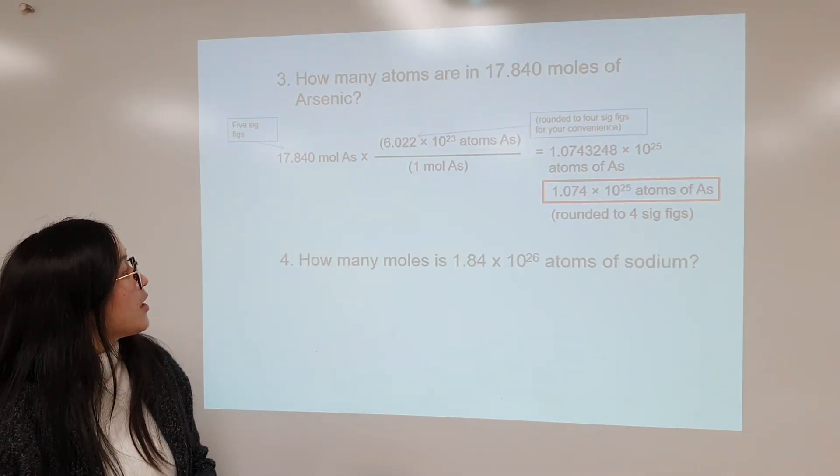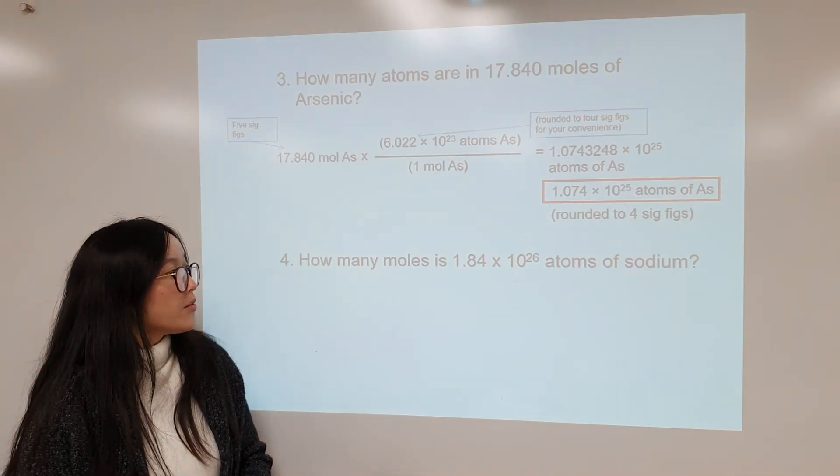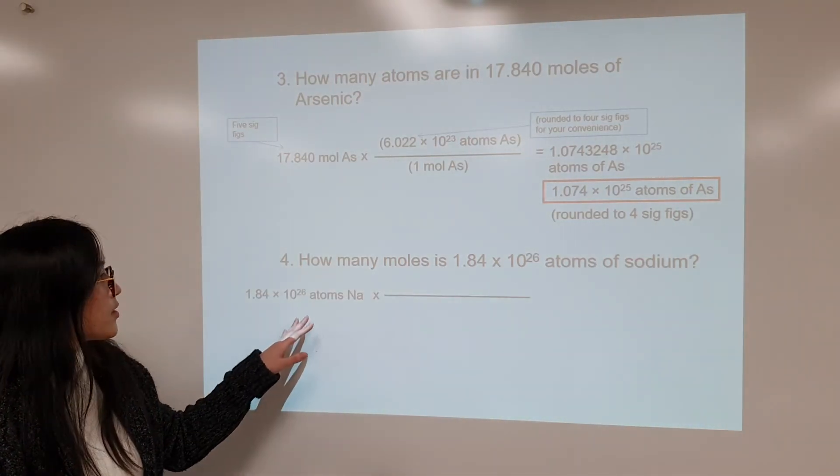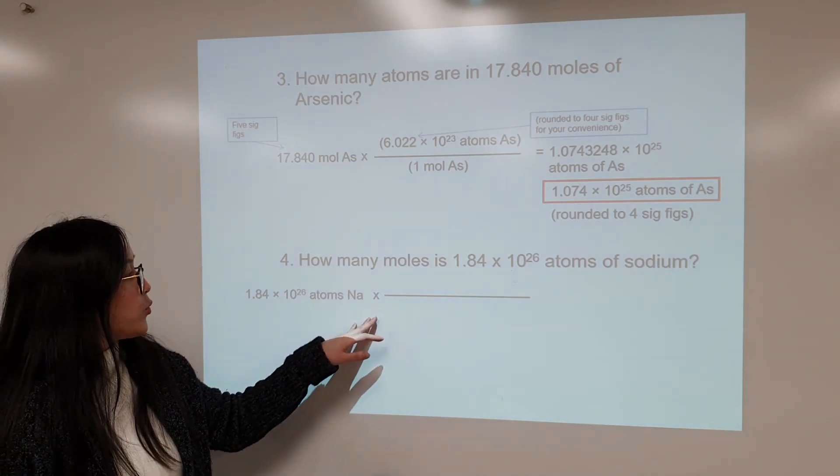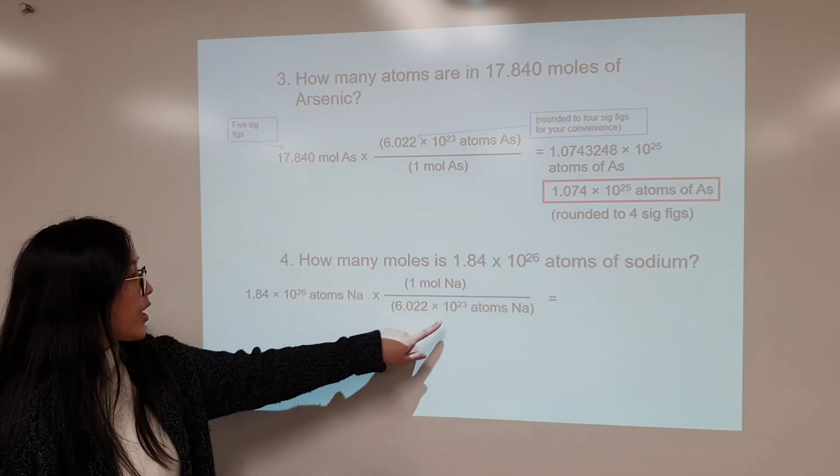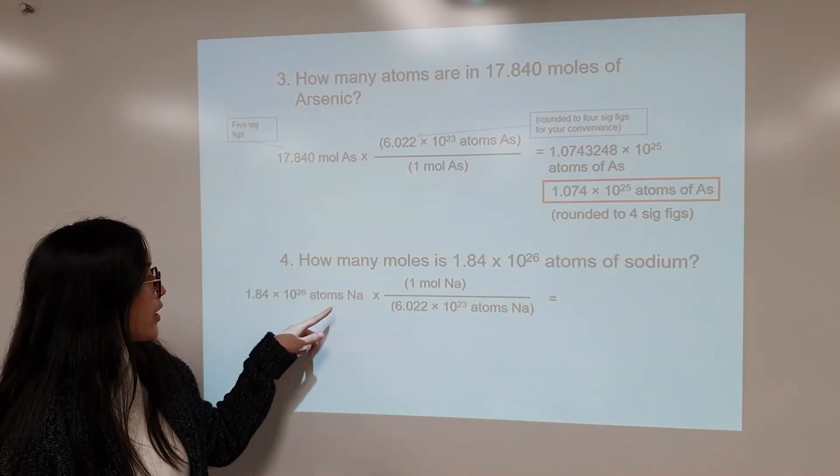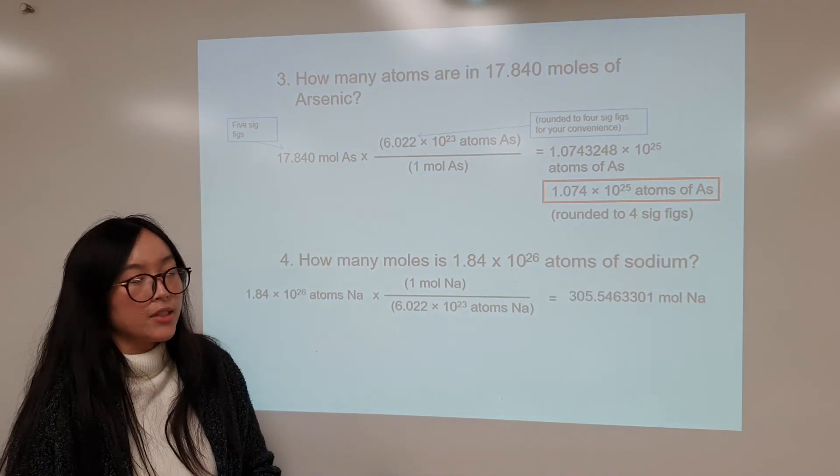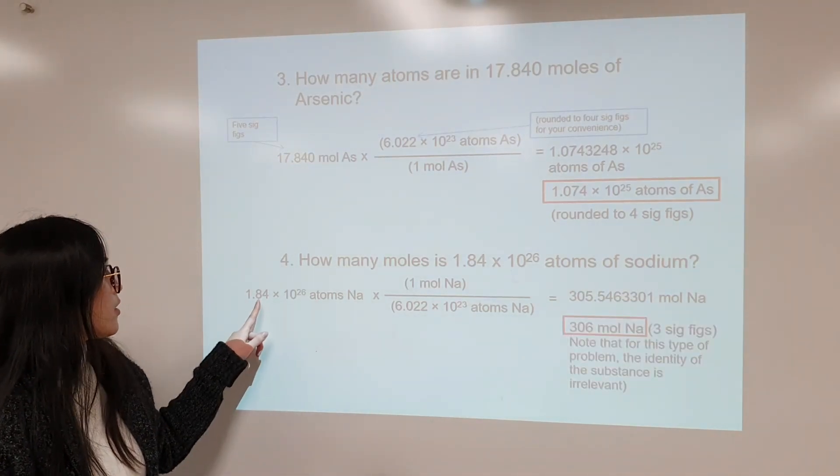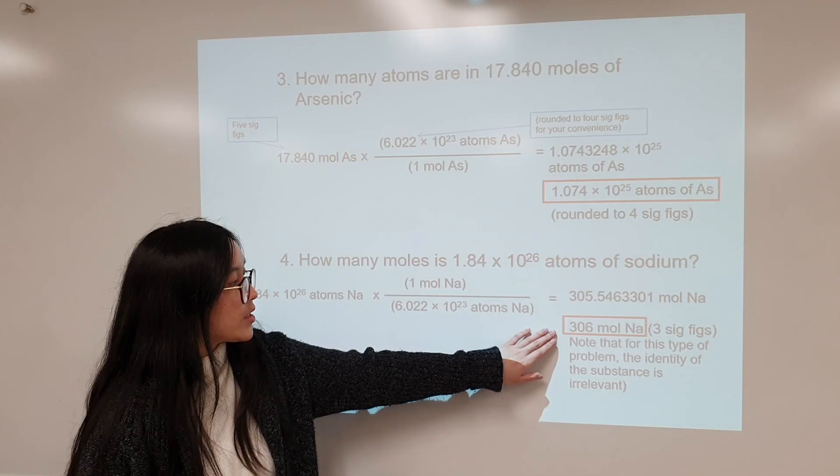And for number 4, how many moles is 1.84 times 10 to the 26th atoms of sodium? First write down the given and set up the equation so that you can cancel out atoms of sodium and get moles at the end. So put atoms units appropriately so you can cross them out. You'll get this number unrounded in moles of sodium. And then our rounded number has 3 sig figs. So we want to count the sig figs and make sure that we have the correct sig figs at the end, which is 3.